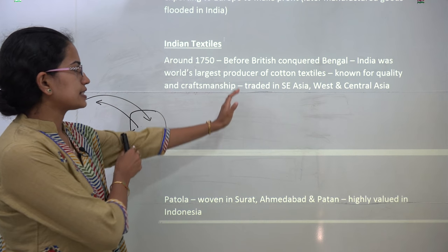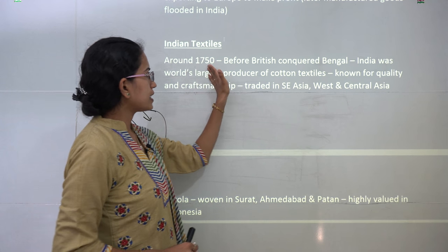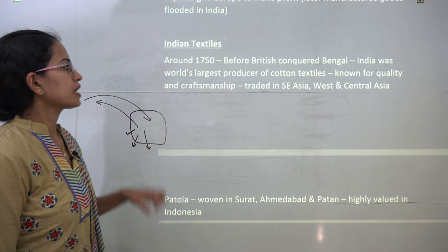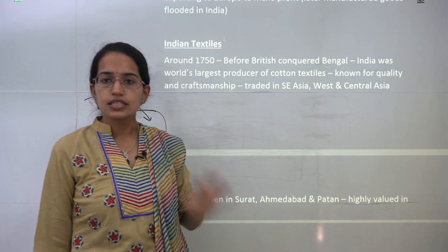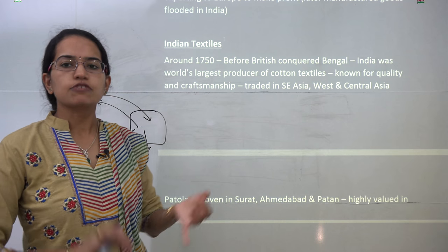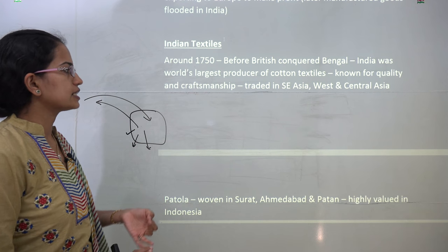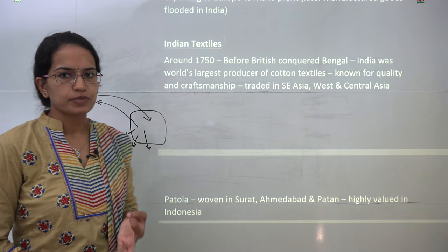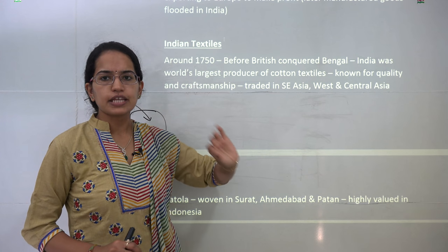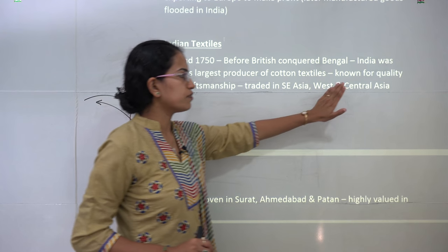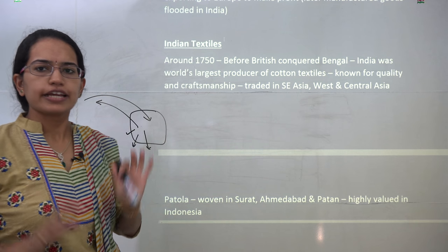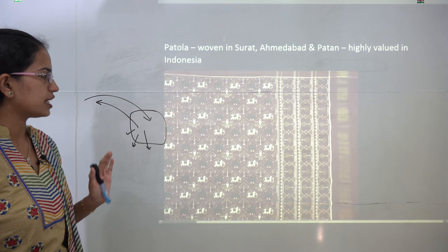Talking about Indian textile, around 1750 before the British conquered Bengal, India was considered the largest producer of cotton textiles in the world. It was known for quality production, fabrication, and fine craftsmanship. Much of the cotton textile was traded to West and Central Asia and Southeast Asia, with most trading confined to the Asian region itself.